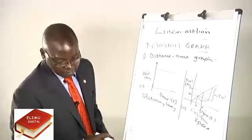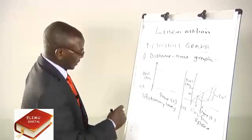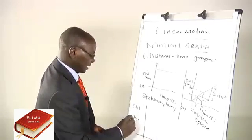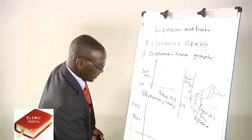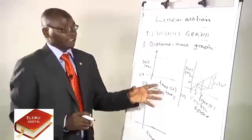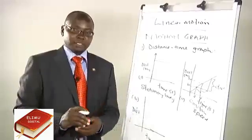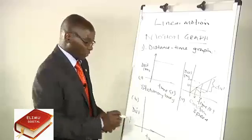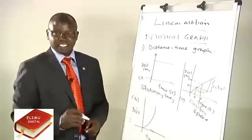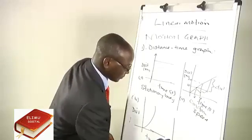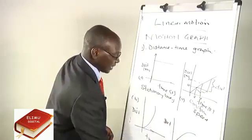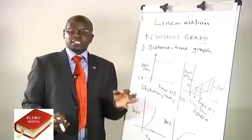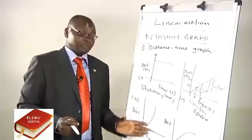The third scenario: we can have a distance-time graph where the rate of change of distance with time is varying — it is not constant. This can appear as a curve that is increasing steeply, or as a curve that is becoming flatter. In both cases, the rate of change of distance with time is varying, so the speed is varying.